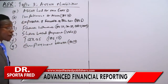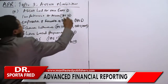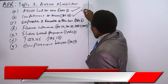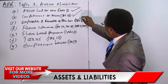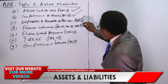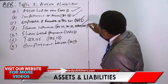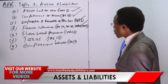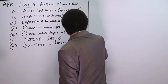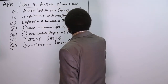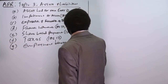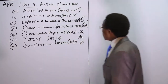From our previous sessions, we have already covered IAS 36, IFRS 6, and financial instruments. We have not yet covered share-based payments, taxes, or employment benefits — and we are also going to cover employment benefits.